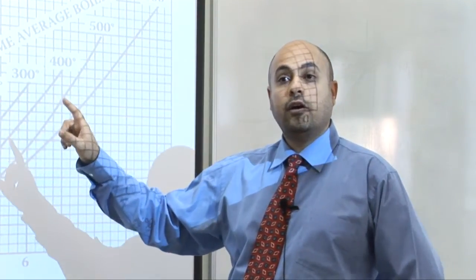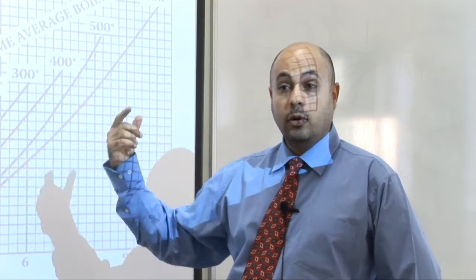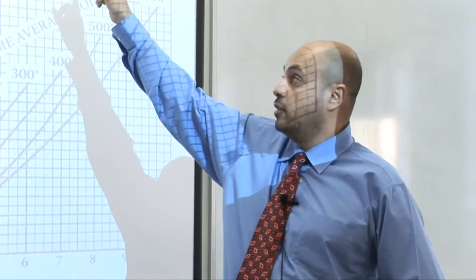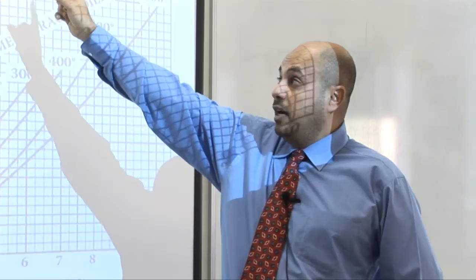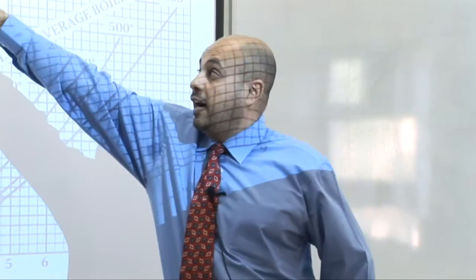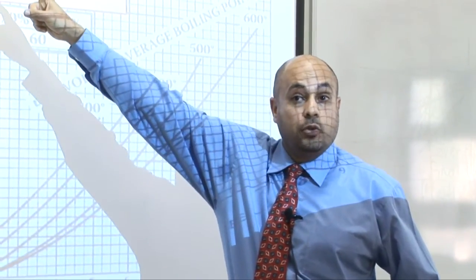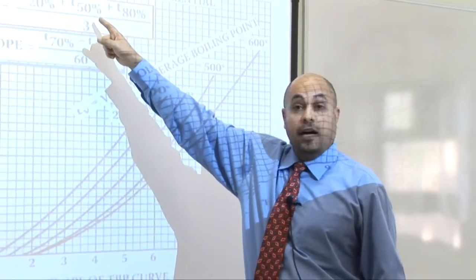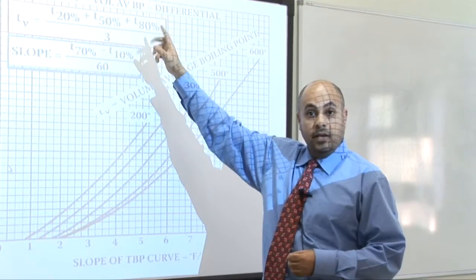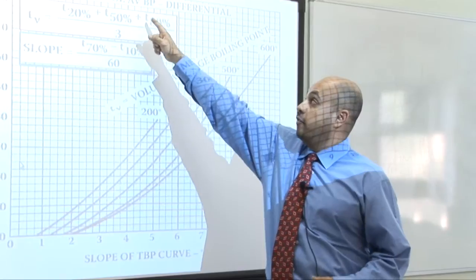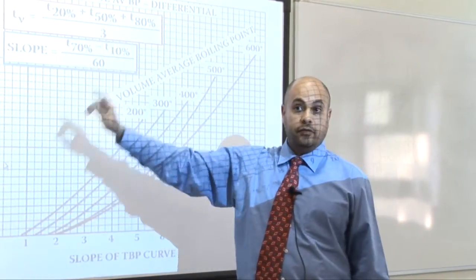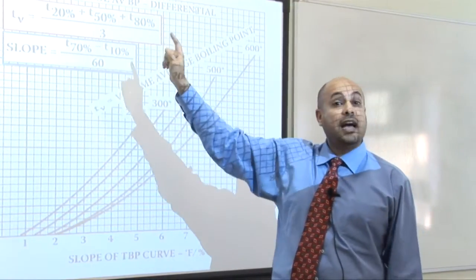This is a very important chart for how to find what we call the mean average boiling point of crude. The top equation states: mean average boiling point equals volume average boiling point minus a differential. The volume average boiling point uses an equation where you find the boiling point at 20% volume of the crude, the boiling temperature at 50% of the volume, and the boiling point temperature at 80% of the volume. This number is called the volume average boiling point. Then you read the slope from the chart against the volume average boiling point to get your differential, and you put that into the equation to get the mean average boiling point of the crude.